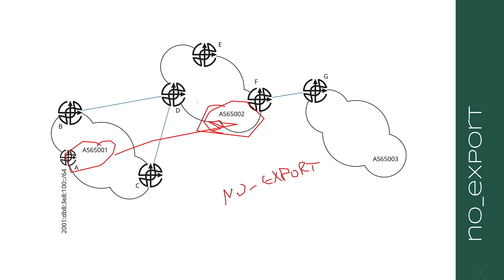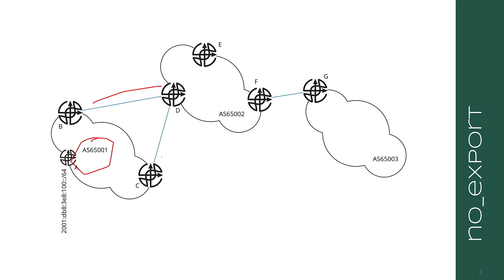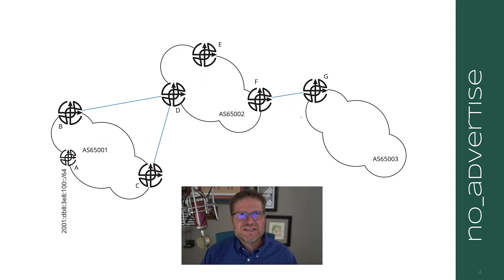When AS 65001 sets up a route map or filter so that B and C both send the No Export community to D, D will advertise the route to E and F so that every BGP speaker within AS 65002 knows about the 100::/64 destination — but F will not advertise the route to G. This is useful in many different deployment situations and we'll likely revisit it when we discuss deploying BGP in the real world.